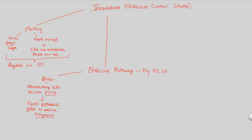What does ecdysteroid tell us? Its job is to be produced, but importantly, its production is not continuous — it's actually produced in bursts. Sometimes hormones are produced continuously to maintain a steady state, but this hormone is not. A burst of ecdysteroid will be a specific trigger: when you have a burst of ecdysteroid, this will directly trigger the process of molting. The burst is going to be a trigger to molt, so you need a burst of ecdysteroid from the prothoracic gland to know when to molt.